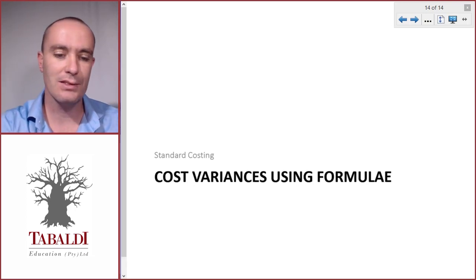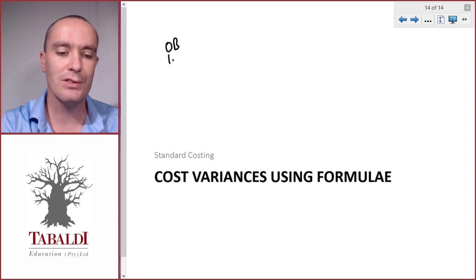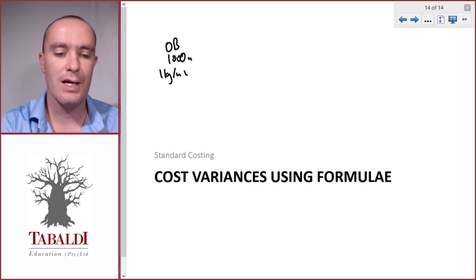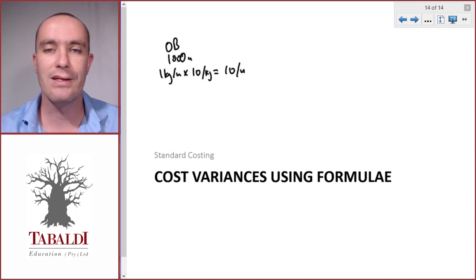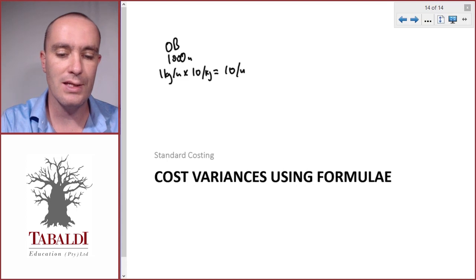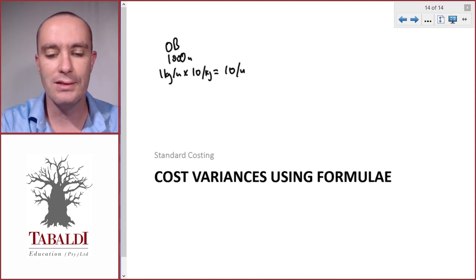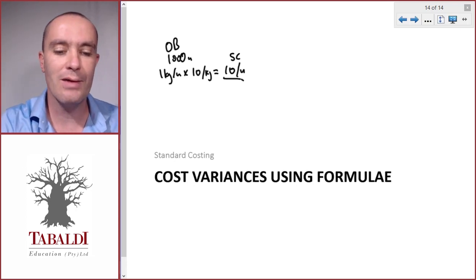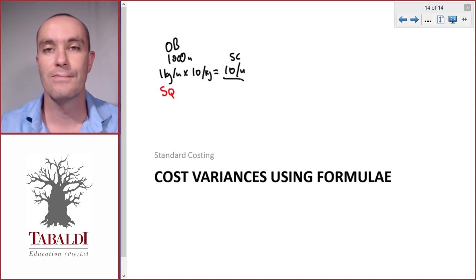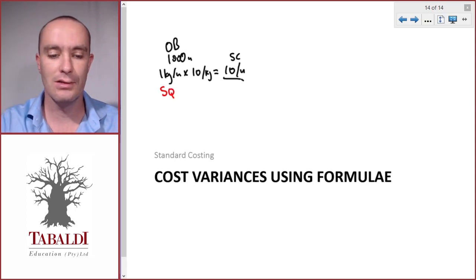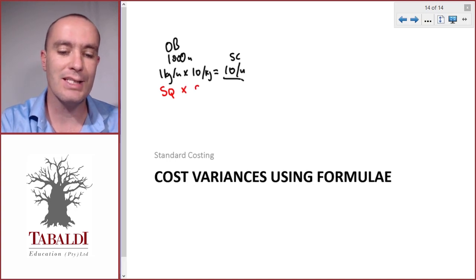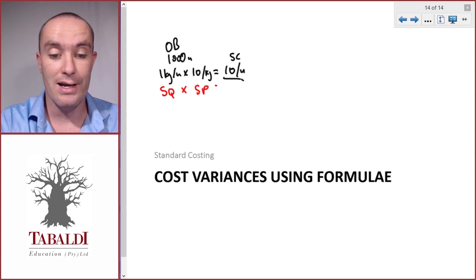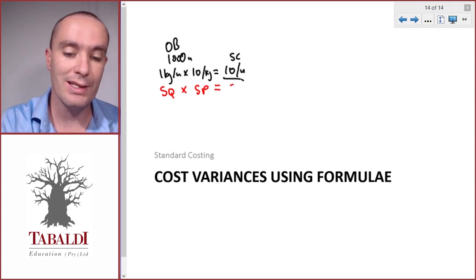Let's take the material information. We had an original budget for 1,000 units: one kilogram per unit at $10 per kilogram. That's the standard cost — $10 per kilogram times one kilogram per unit equals $10 per unit. The one kilogram per unit is the standard quantity from our standard cost card, and the $10 per kilogram is the standard price. Standard quantity multiplied by standard price gives us the standard cost.